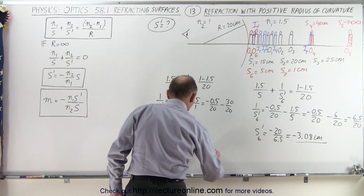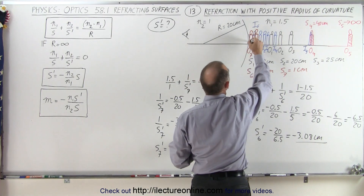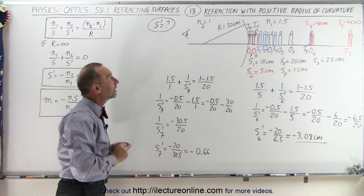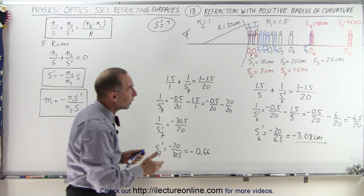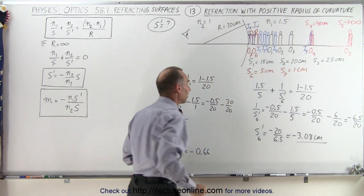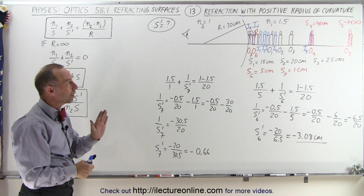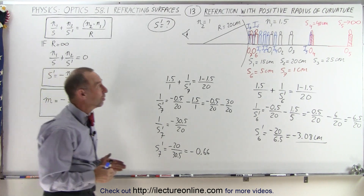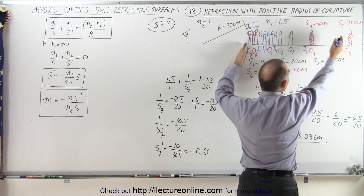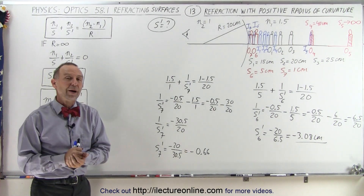So minus 0.66 — about two-thirds of the way between the object and the boundary. You can see that no matter where we place the object, the image will always be on the same side if the curvature is convex relative to the object and the index of refraction on the right side is greater than the index of refraction on the left side. For all cases with all objects, the image was somewhere on the same side as the object, with a range anywhere from 0 to 40 centimeters — even when the object was placed near infinity. And that's how we learn about refraction.